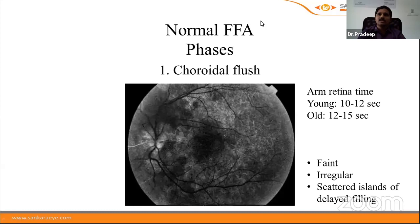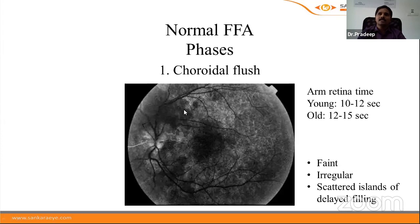Normal FFA is described in phases. The first is the choroidal flush phase. The interval between dye injection and its appearance in choroidal circulation is called the arm-to-retina time, normally 10–12 seconds in young individuals and 12–15 seconds in older individuals. Choroidal flush is seen as a faint irregular hyperfluorescence, and scattered islands of delayed filling can be seen even in normal individuals.